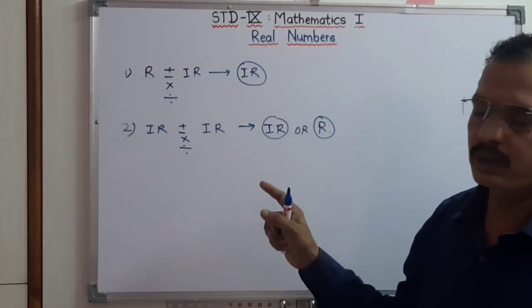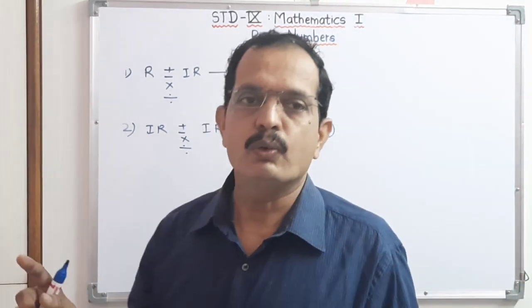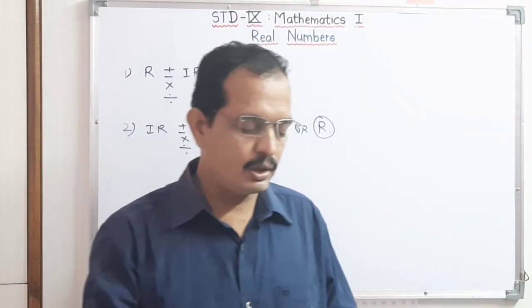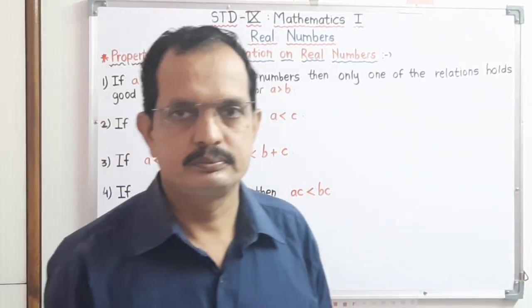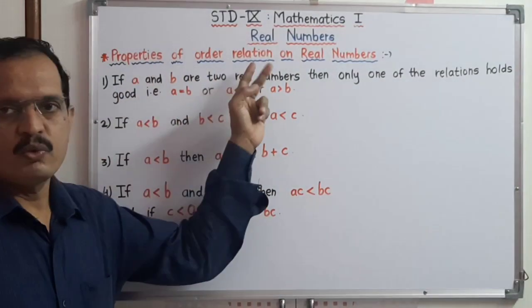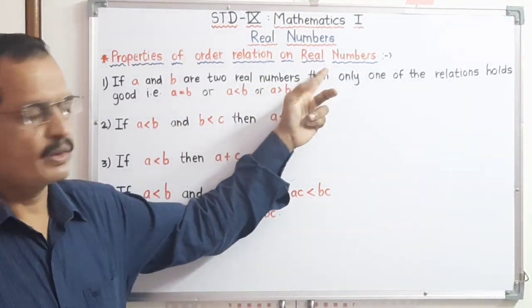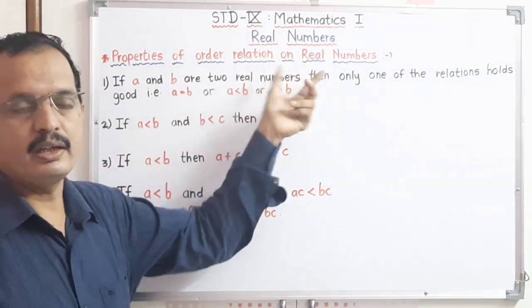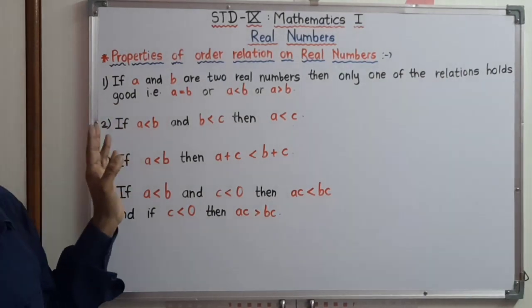Now we have to learn the properties about the order relation of real numbers. Properties of order relation on real numbers — the first property is given.